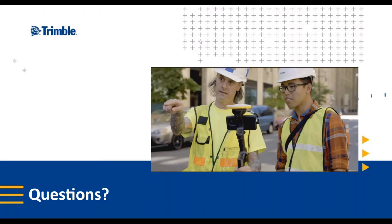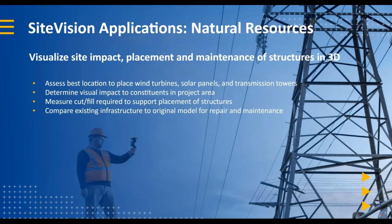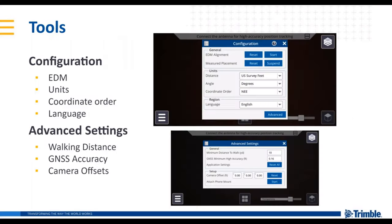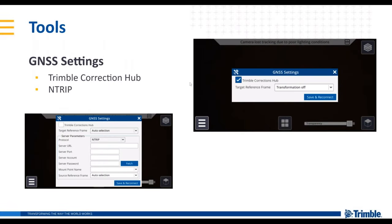On private VRS networks: yes, you can dial in a private VRS network. In GNSS settings, uncheck the Trimble Correction Hub, and the NTRIP settings will appear where you can enter your URL or IP address, port, and account credentials.